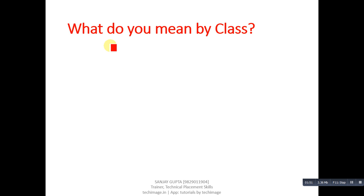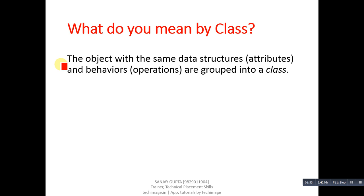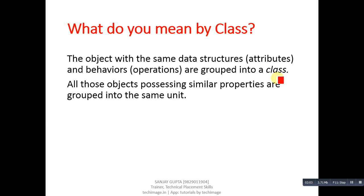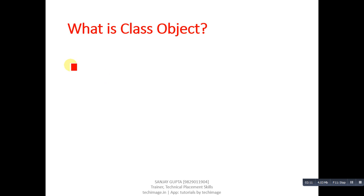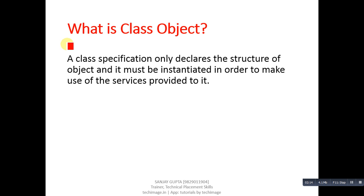What do you mean by class? Answer: objects with the same data structures, known as attributes, and behaviors, known as operations, are grouped into a class. All objects possessing similar properties are grouped into the same unit.